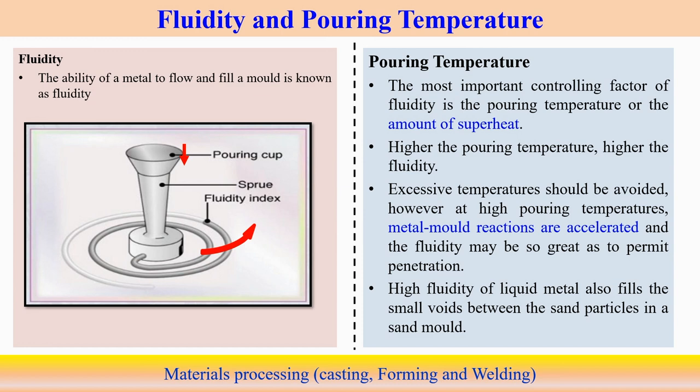Fluidity is a simple measure of the metal's ability to flow within the mold cavity. We can check fluidity using a simple setup with a pouring cup and tapered sprue. Liquid metal is poured from the top and we observe how far it flows before reaching the solidification temperature and changing phase from liquid to solid. The distance and velocity it travels determine the fluidity of that liquid metal.